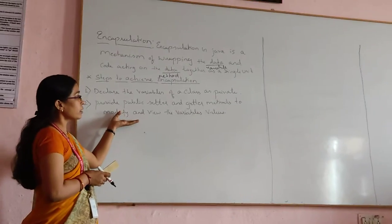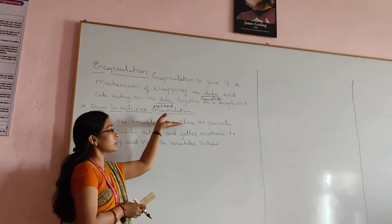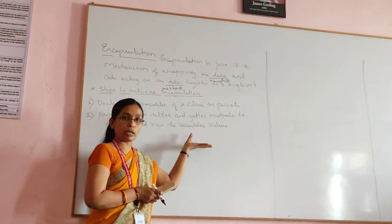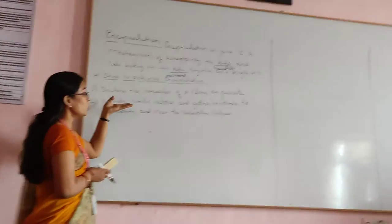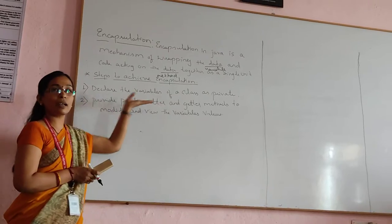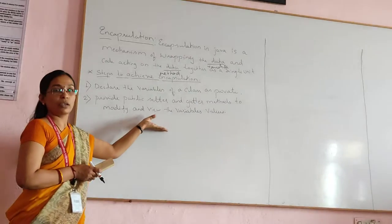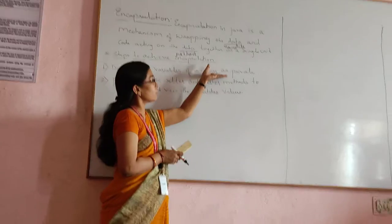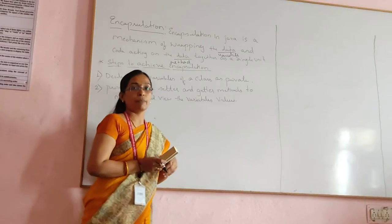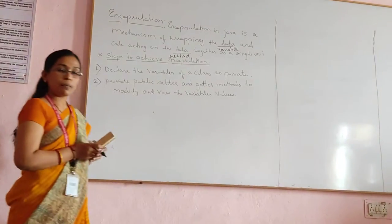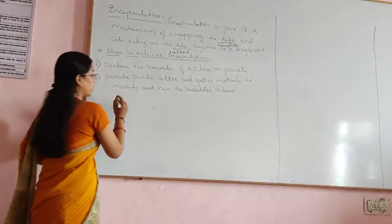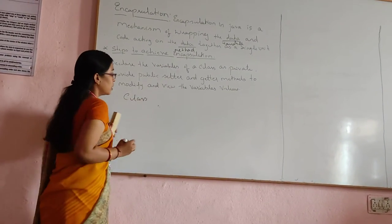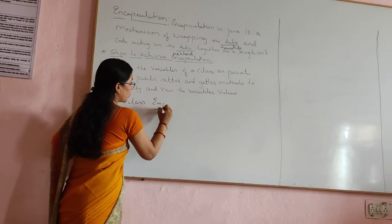Since we are declaring the variable as private, direct accessing is not allowed. For this reason we need to have public setter and getter methods in order to modify and view the private data variables. We are going to see the same concept with the help of a program.